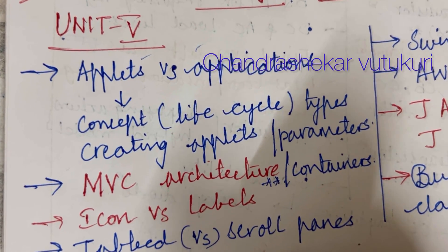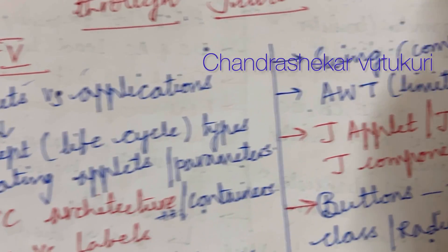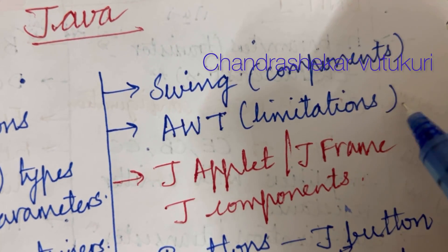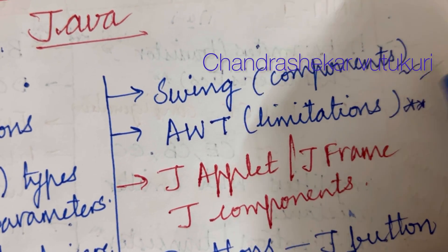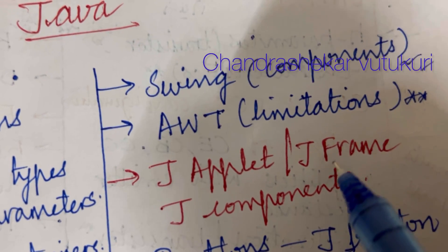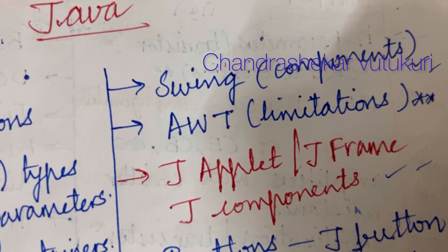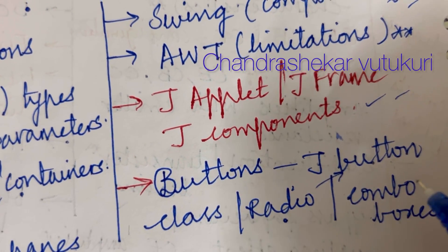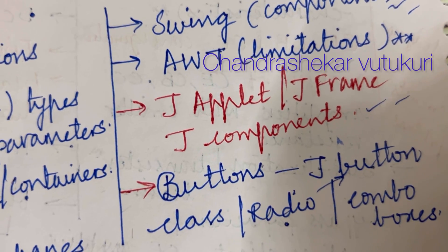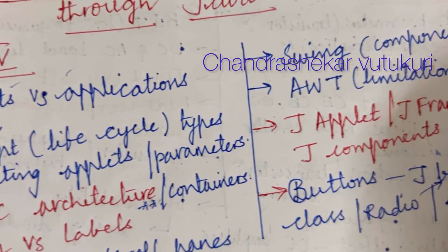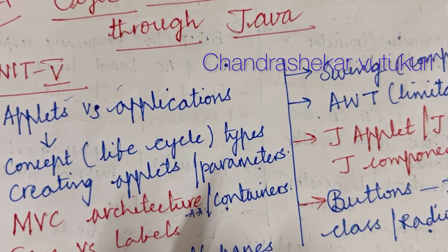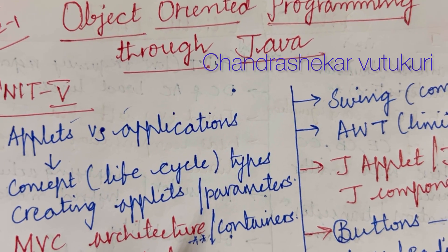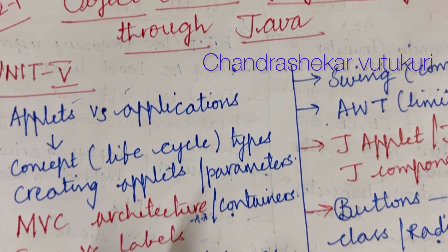These all may occur in the question paper in the form of 10 as well as 11 mark questions. Swing components and AWT limitations is set to be the topmost question. JApplet, JFrame, and JComponent are short questions. Buttons, JButton class, radio buttons, as well as combo boxes — these are all set to be the topmost and important questions for OOP through Java under unit 5.